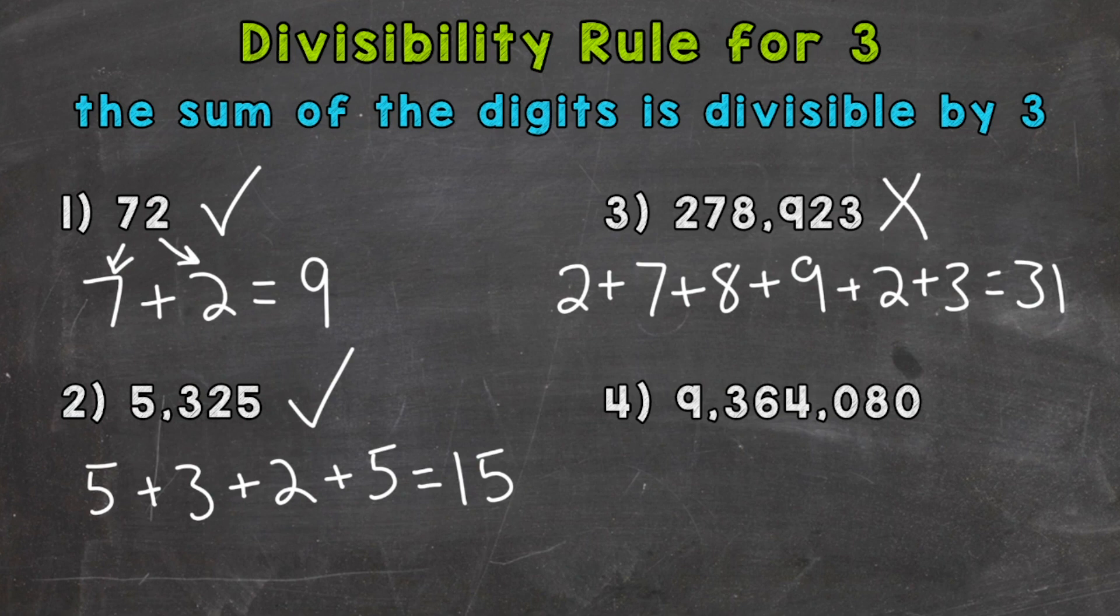And lastly, number 4, 9,364,080. Let's find the sum. 9 plus 3 plus 6 plus 4 plus 8.